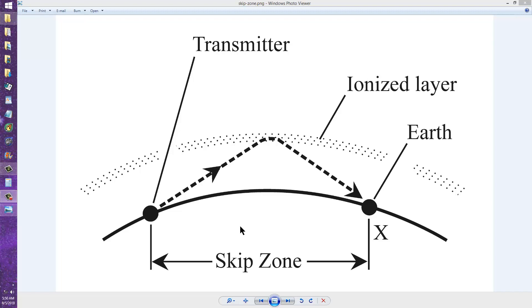Especially on the upper HF bands, you will often encounter something called the skip zone. Suppose this dot represents you, and this dot represents the station you're communicating with. And you can, in fact, hear that station, because the signal travels up to the ionosphere, reflects back down, or refracts back down to point X.